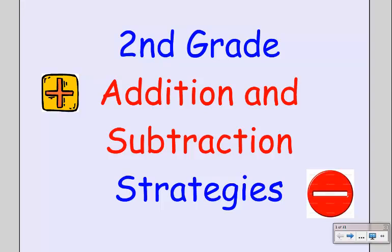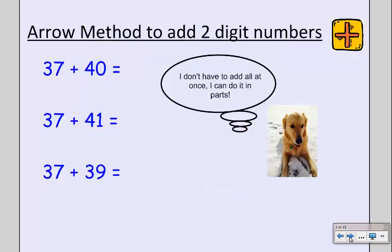Hello, today we're going to look at some second grade addition and subtraction strategies with my dog, Scoop. So today we're going to look at a method known as the Arrow Method. And what Scoop thinks about the Arrow Method is that if she has 37 plus 40, she doesn't have to add it all at once. She can do it in parts.